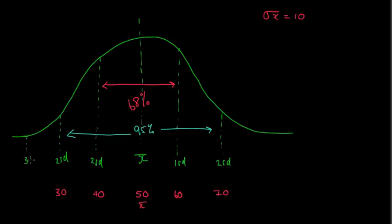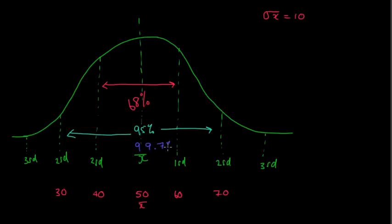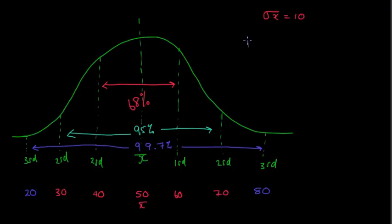So let's go to three standard deviations now. We then say, after the 95%, that 99.7% of all scores lie within three standard deviations of the mean. So three standard deviations will be 30 marks either side. This is what we call a normal distribution, or the bell curve.